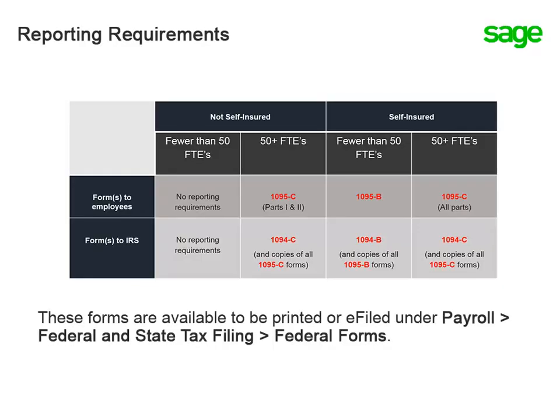This chart provides, at a glance, the Affordable Care Act forms and information that must be provided to employees and the IRS at the end of the year. The number of full-time equivalent employees at your business and the type of health care plan you have offered will determine what forms you are required to submit. To learn how to determine your full-time equivalent, or FTE, employee count, view the lesson titled Track and Reconcile ACA Hours Allocation.